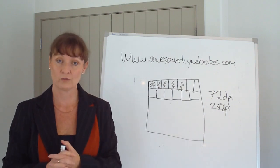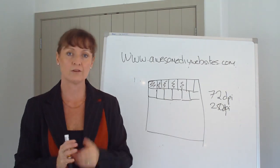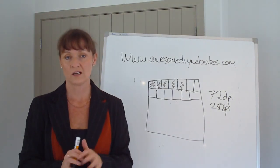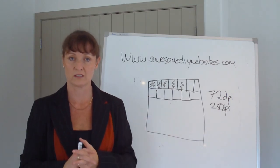That explains why sometimes when you print something off a website it looks a bit hazy. It looks very clear on your screen, but when you actually print it out it looks a little bit broken up. That is because everything you see on your screen is 72 dots per inch.